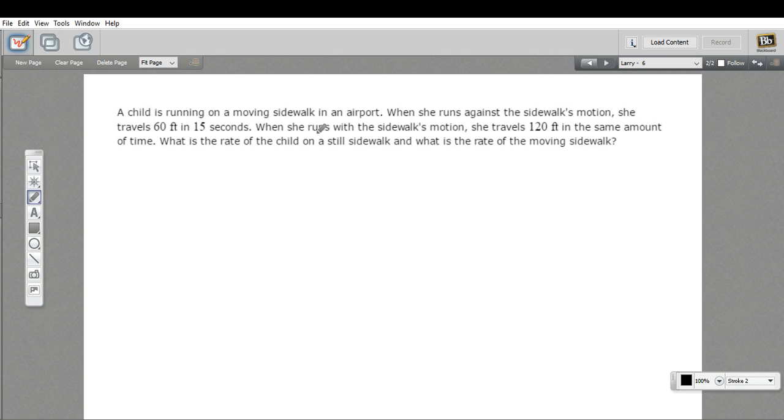And then it says, what is the rate of the child on a still sidewalk? That means just her regular running speed. And what is the rate of the moving sidewalk? So we've got two things we need to find, and I'm just going to create variables for those things. So we'll call how fast the child runs x and how fast the sidewalk moves y.